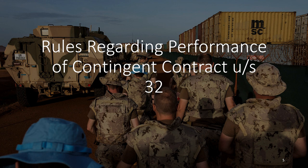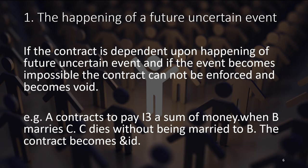Now, what are the rules regarding the performance of contingent contracts? Under Section 32, if a contract is dependent upon the happening of a future uncertain event and that event becomes impossible, the contract cannot be enforced and becomes void. For example: A contracts to pay B a sum of money when B marries C. C dies without being married to B. The contract becomes automatically void — there is nothing further to discuss.